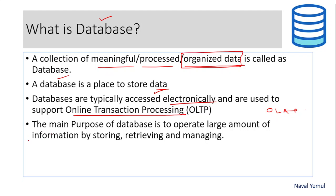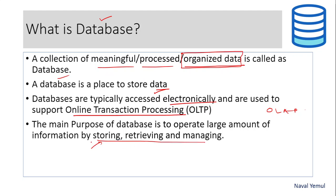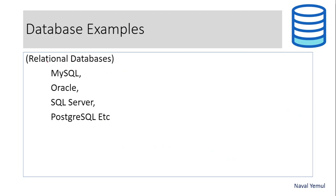The main purpose of a database is to operate on large amounts of information by storing it, retrieving it, and managing it. We store the data, then we start retrieving it — pulling data from there. If you want to manipulate or change something, we manage that too. You can pull out specific records or alter few records using the database.